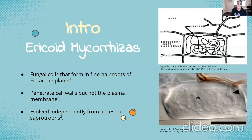All right, so now that you've gotten an overview of mycorrhizal associations, let's talk about ericoid mycorrhizals specifically. Ericoid mycorrhizals are characterized by fungal coils that form in the epidermal cells of fine hair roots of ericaceous plant species. Ericoid mycorrhizal fungi establish loose hyphal networks around the outside of root hairs.